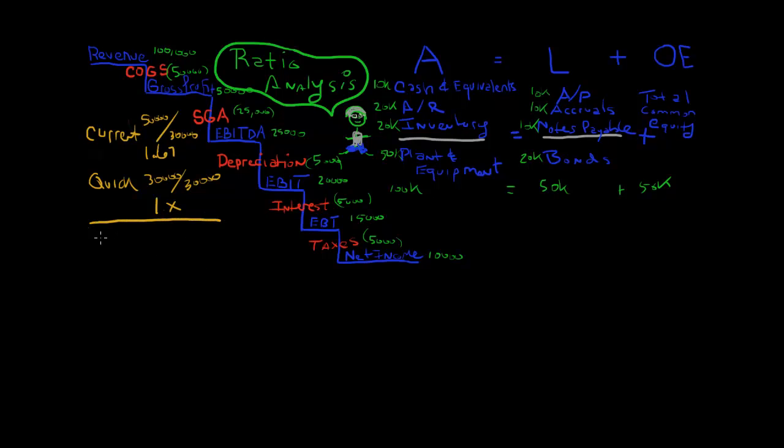Let's go to the next section, asset management. I'm going to start with day sales outstanding, or sometimes referred to as average collection period. These next ratios are going to be looking at how well management is managing our assets that drive our revenues. The day sales outstanding takes your accounts receivable, which in this case is $20,000, and divide by the average daily sales, which is taking your total revenue, $100,000, and dividing by the number of days in the year, 365.